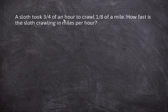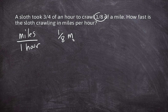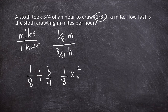A sloth took three-quarters of an hour to crawl one-eighth of a mile. How fast is the sloth crawling in miles per hour? We take the given rate and convert to a unit rate in miles per hour. Miles go on top — one-eighth — and hours go on the bottom — three-fourths. To convert, we divide the numerator by the denominator: one-eighth divided by three-fourths. We keep one-eighth, change division to multiplication, and write the reciprocal of three-fourths, which is four-thirds.